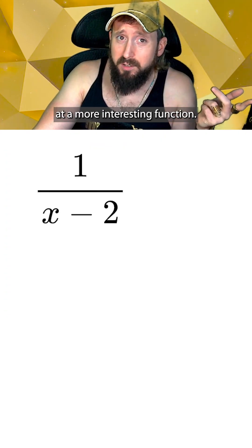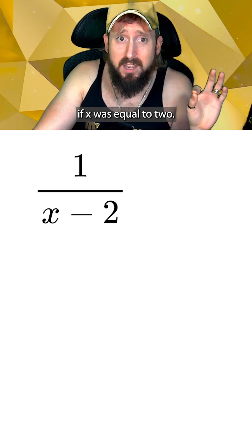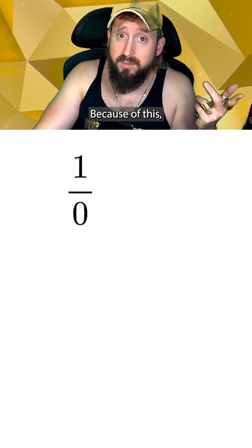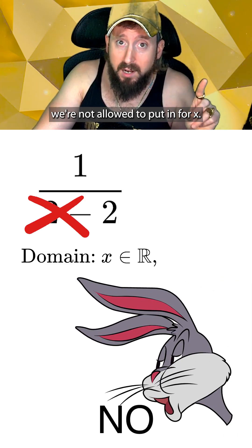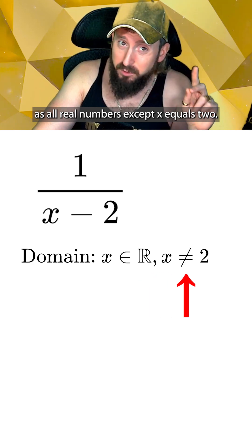Let's take a look at a more interesting function, 1 over x minus 2. Here we can see that dividing by zero could happen if x was equal to 2. Because of this, 2 is the only number we're not allowed to put in for x, so we have to write our domain as all real numbers except x equals 2.